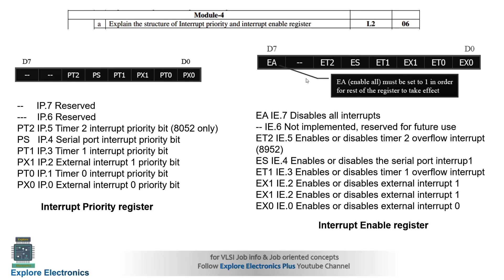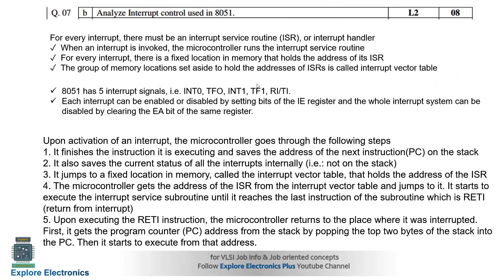The interrupt enable register has bits EX0 to ET2, which correspond to enabling or disabling particular interrupts. The EA bit is very important — EA stands for 'enable all' and it must be set to one in order for the rest of the register bits to take effect.